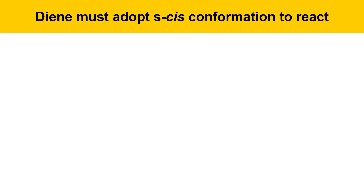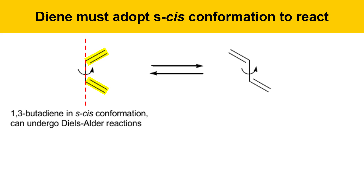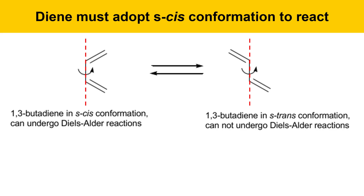One requirement in the Diels-Alder reaction is that the diene must adopt an S-cis conformation in order to react. For 1,3-butadiene, the S-cis conformation has the two double bonds on the same side of an imaginary line along the single bond. In the S-trans conformation, 1,3-butadiene cannot undergo a Diels-Alder reaction because it doesn't have the right geometry. Dienes in Diels-Alder reactions must be able to adopt S-cis conformation, and 1,3-butadiene has no trouble with that.